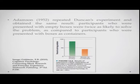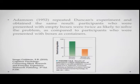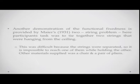Adamson in 1952 repeated Dunker's experiment and got the same result. Participants who were presented with empty boxes were twice as likely to solve the problem compared to participants presented with boxes as containers, because seeing the boxes as containers primed and reaffirmed the notion that boxes can only be used as containers and cannot be attached to the wall. This is a demonstration of how people think in very fixed, inflexible ways to approach problems and are sometimes far worse for it.